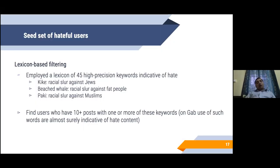The seed set, how do we construct it? We actually create a high precision lexicon of 45 keywords. This lexicon contains various racial slurs. We use these racial slurs in order to build this lexicon. These are high precision because the presence of any one or more of these slurs on the Gab platform, which is reasonably an unmoderated platform, is almost surely indicative of hate content. We call all those users who have 10 or more posts with one or more of these high precision keywords as hateful users.